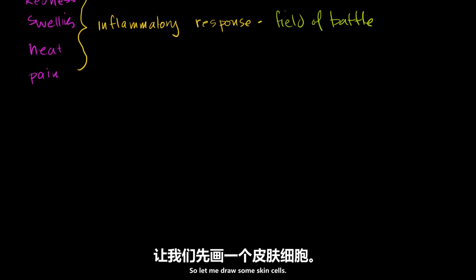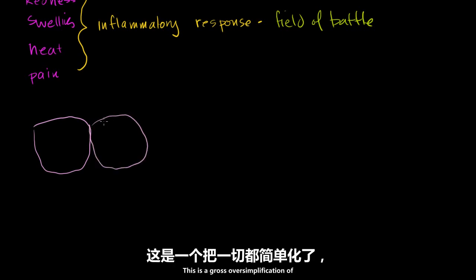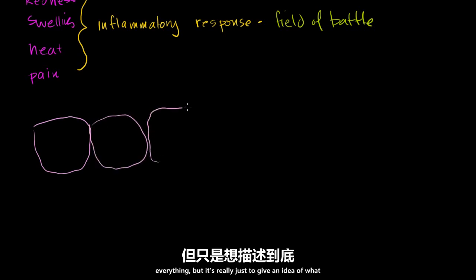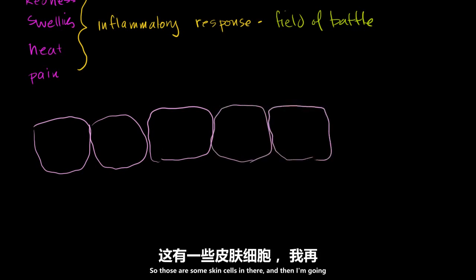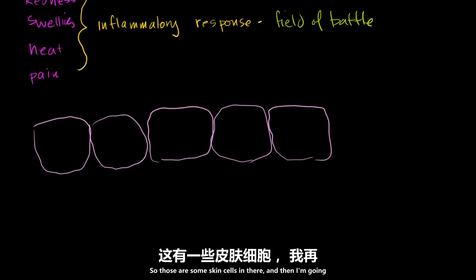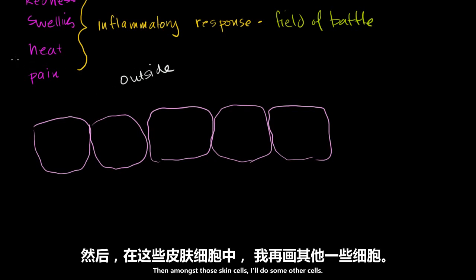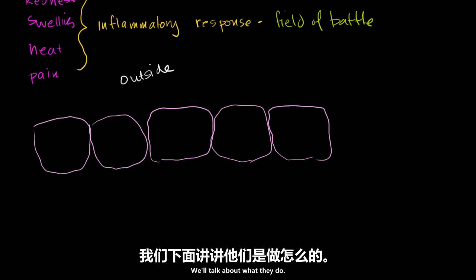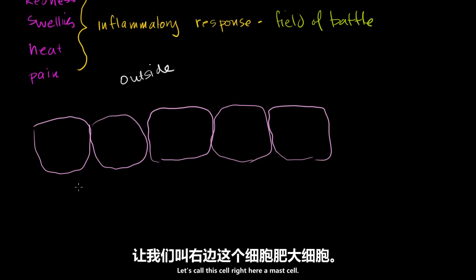Let me draw some skin cells. So let's say that these are skin cells — this is a gross oversimplification, but it's really just to give an idea of what is going on. I'm going to do a cross-section. So those are some skin cells in there. This is the outside world right here. And amongst those skin cells, I'll do some other cells. Let's call this cell right here a mast cell.